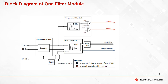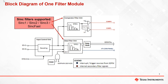Let's take a closer look into each submodule inside a filter channel. Type 0 SDFM supports four different modes to provide bitstream to each filter channel. Each filter channel has a comparator filter unit and data filter unit. Both filter units are based on sync filters, and filter types supported are sync 1, sync 2, sync 3, and sync fast.